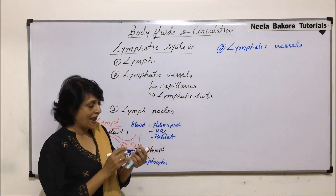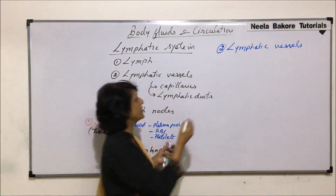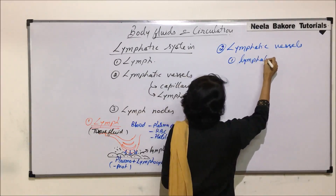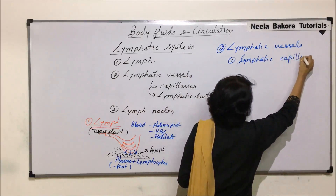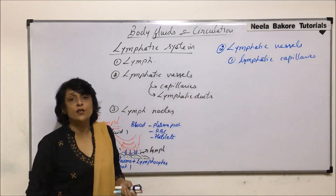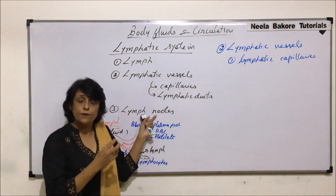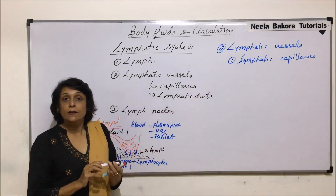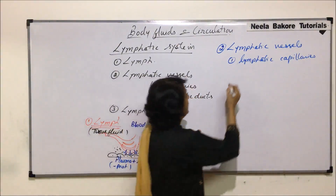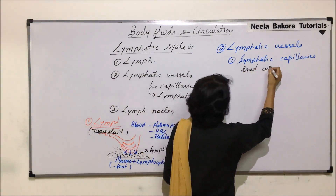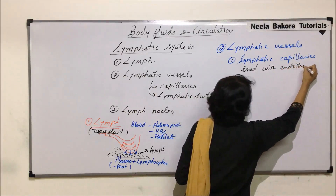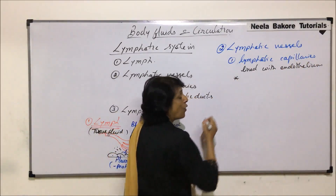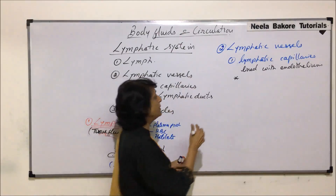Now let us take the next category — lymphatic vessels. There are two types: capillaries and the main lymphatic ducts. Lymphatic capillaries are very much similar to the regular capillaries of blood vessels; the only difference is they carry lymph. They are narrow and lined with only endothelium.